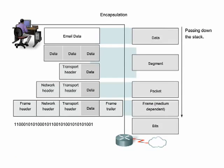As application data is passed down the protocol stack on its way to be transmitted across the network media, various protocols add layer-specific information. This is commonly known as the encapsulation process. The form that a piece of data takes at any layer is called a protocol data unit, or PDU.